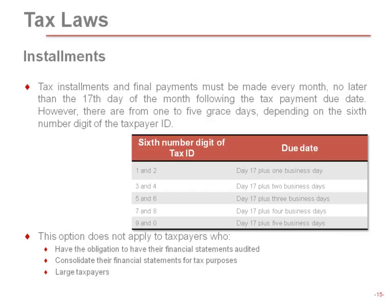This extended deadline doesn't apply to companies that have the obligation to have their financial statements audited. Companies that have to be audited are those with revenue for the previous year of around $3 million U.S. It also wouldn't apply to companies that consolidate for tax purposes and large taxpayers per the definitions that the authorities have.